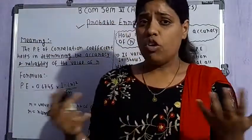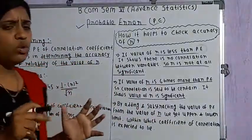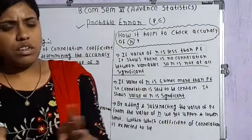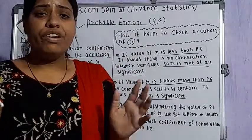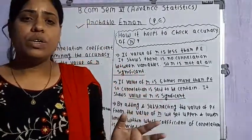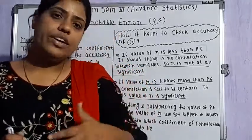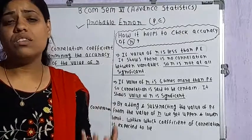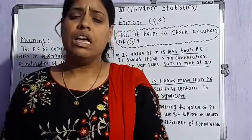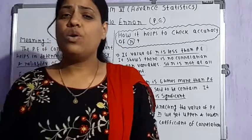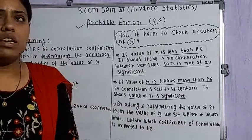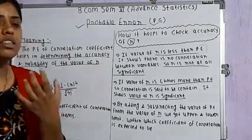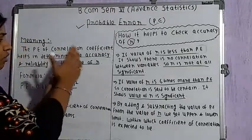In problems we have seen that we are given different items — the number of items, series X and series Y — representing different variables. With the help of that given data, we find the coefficient of correlation, which helps us to interpret the relationship between the two variables — whether it's negative or positive, whether it's strong, moderate, or low. But when we talk about the accuracy of the value of R, how do we know whether the R we calculated is accurate or not? This probable error gives us that tool — it helps us determine the accuracy and reliability of the value of R.